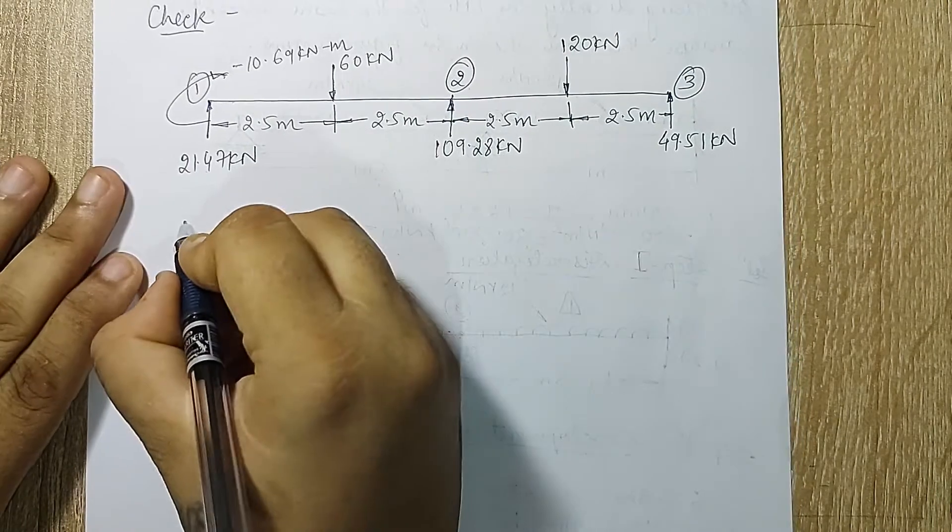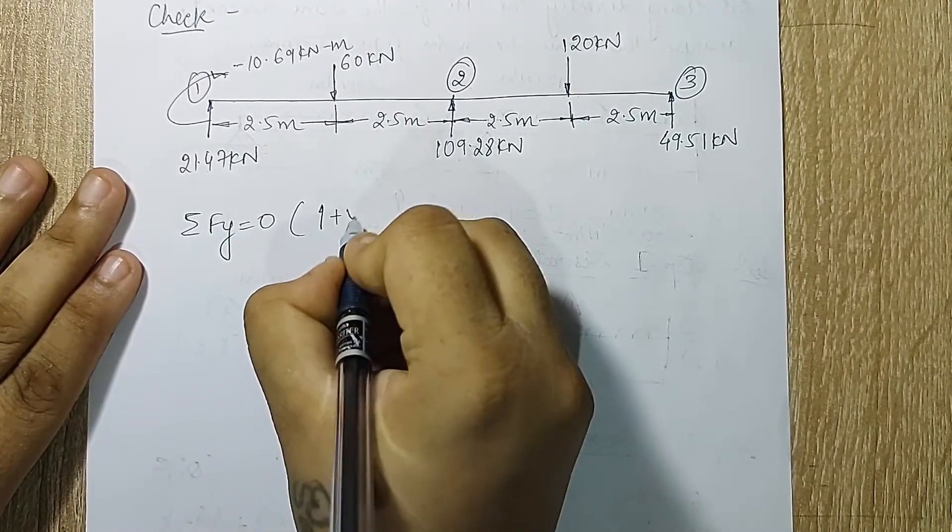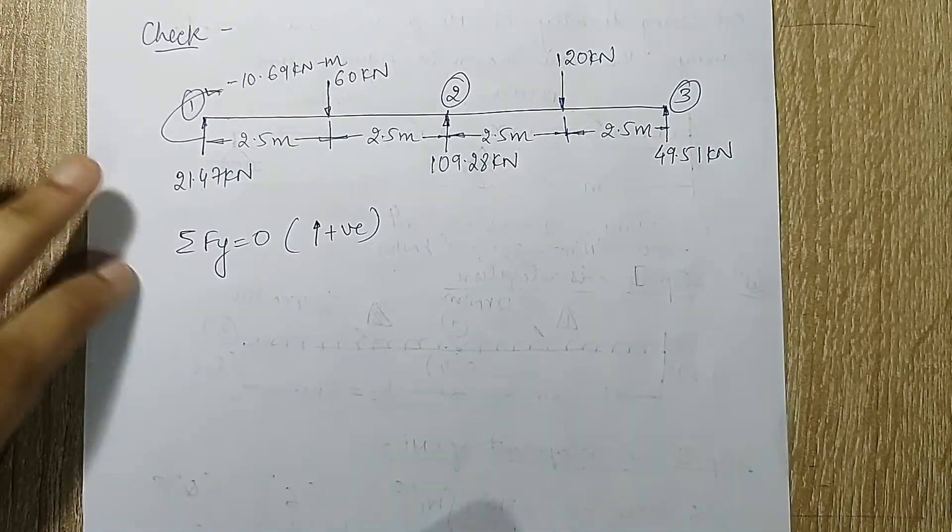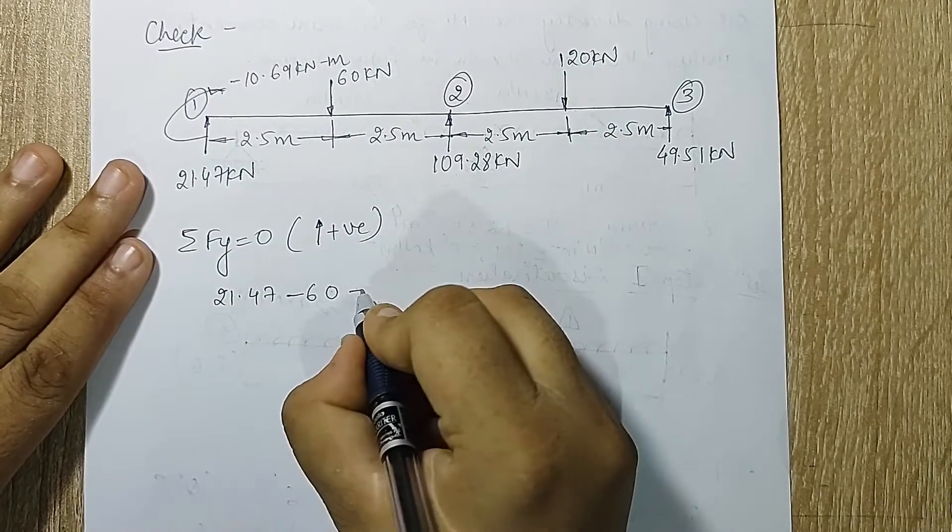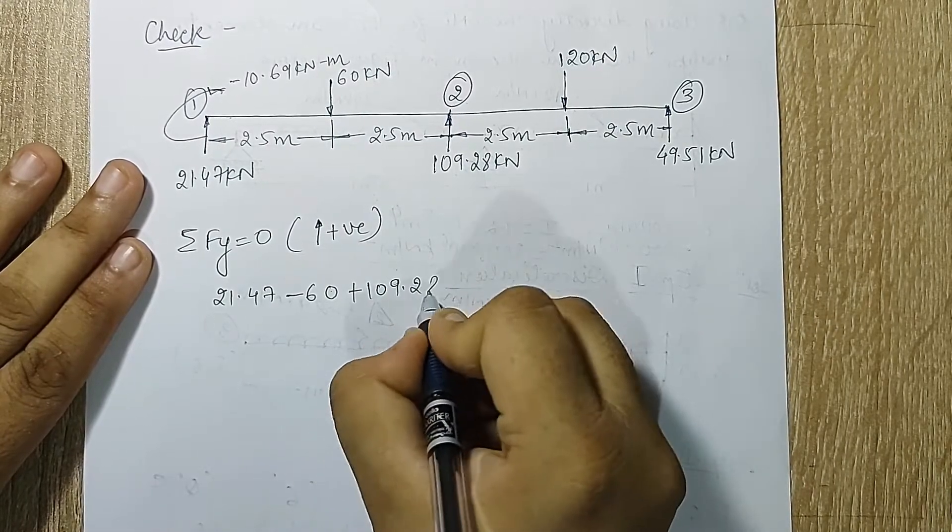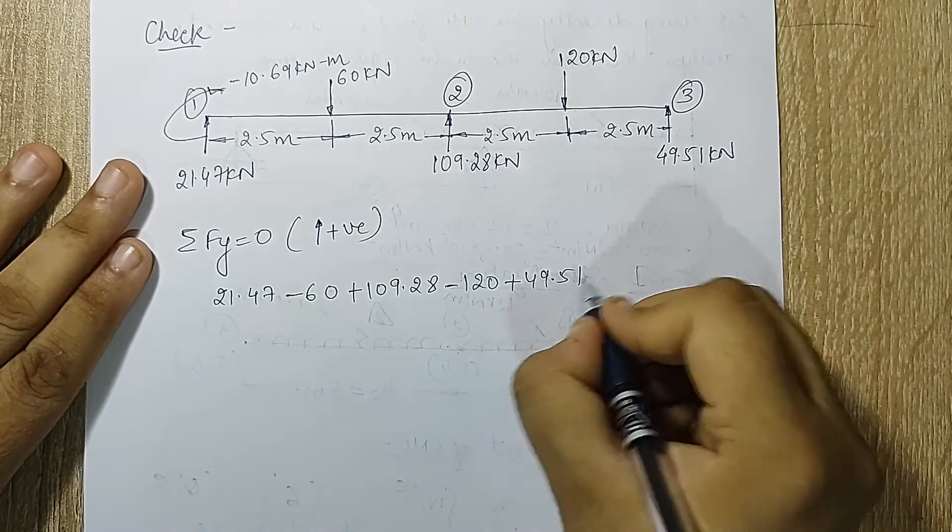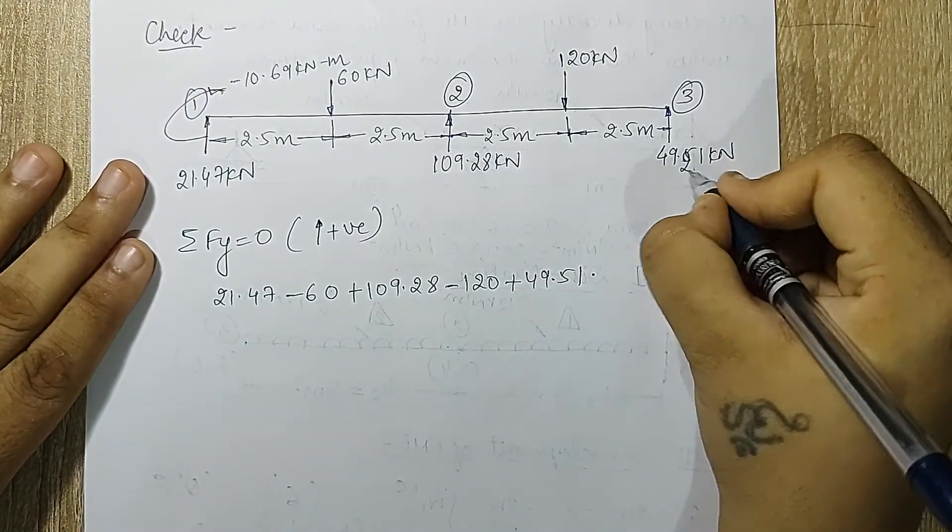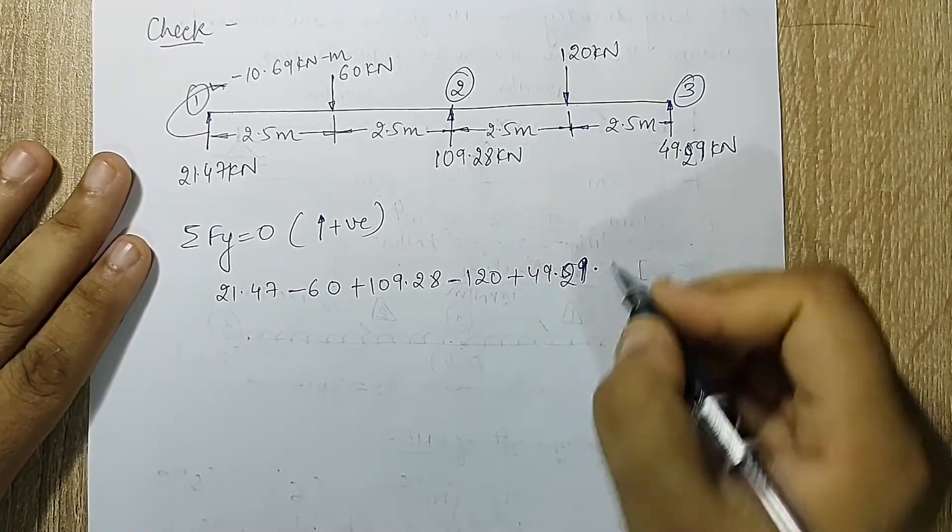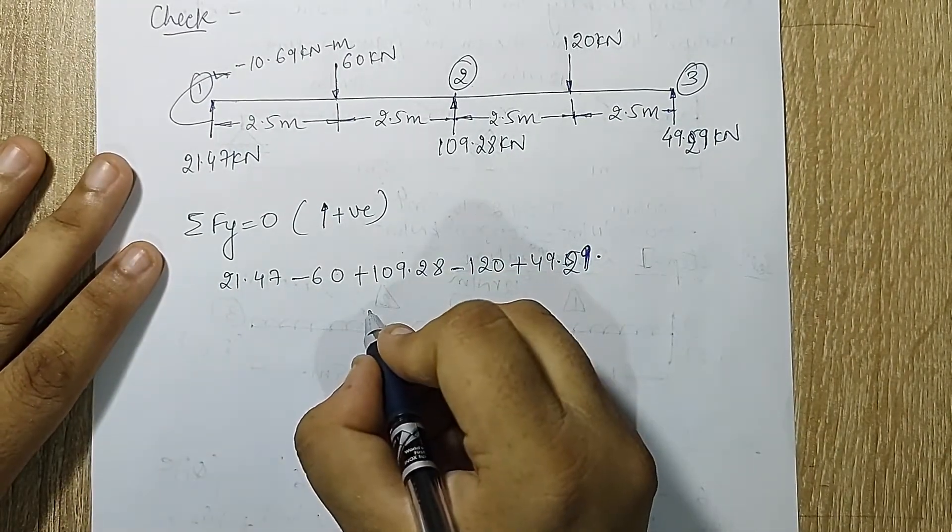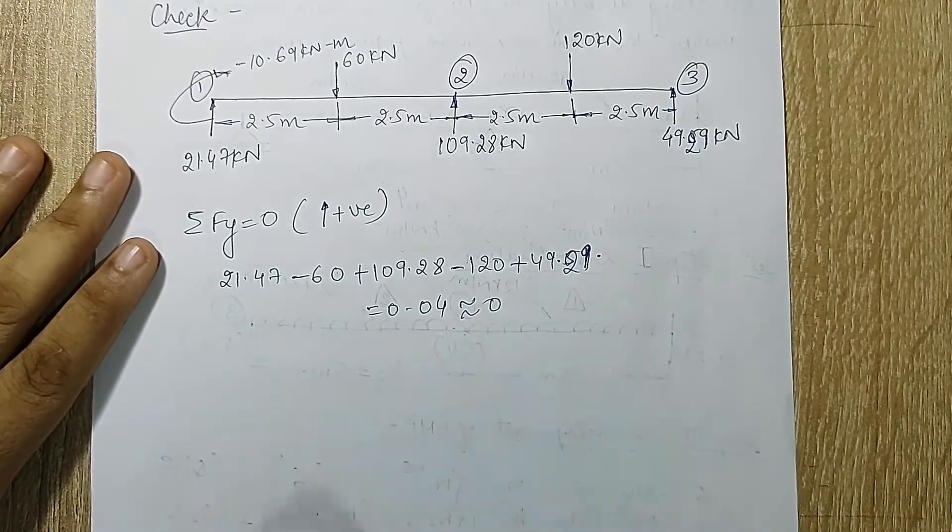Now I'll start with summation of force in y direction is 0. Upward force is considered positive. I have 21.47 minus 60 plus 109.28 minus 120 plus 49.51. When I solve this I get 0.04 which is approximately 0.